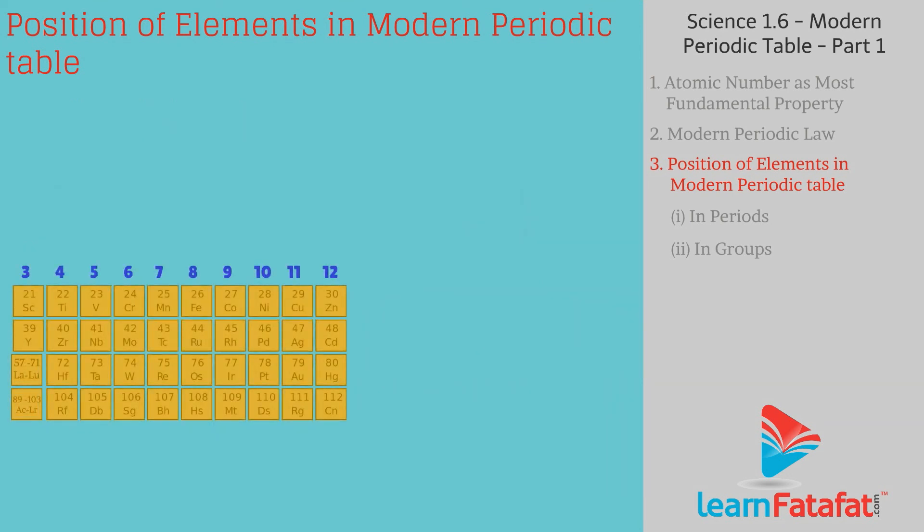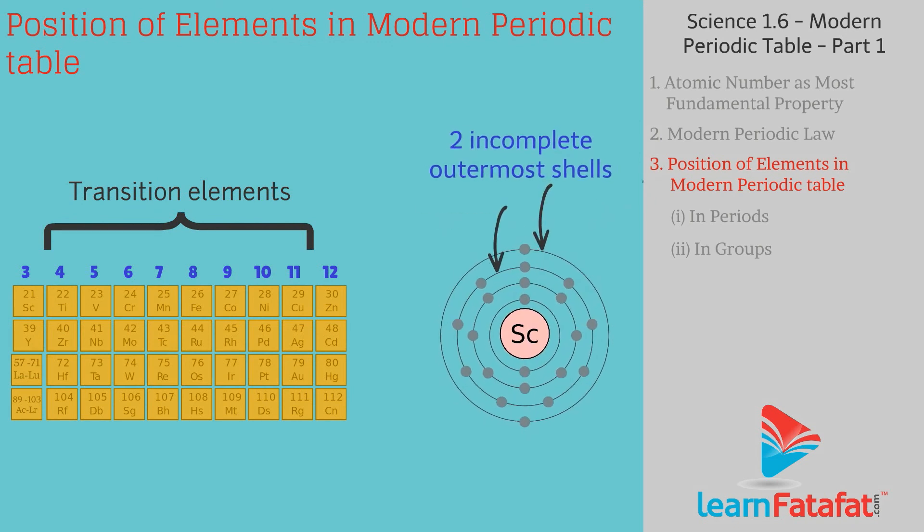Elements of the groups from 3 to 12 are called as transition elements. These elements contain two incomplete outermost shells.